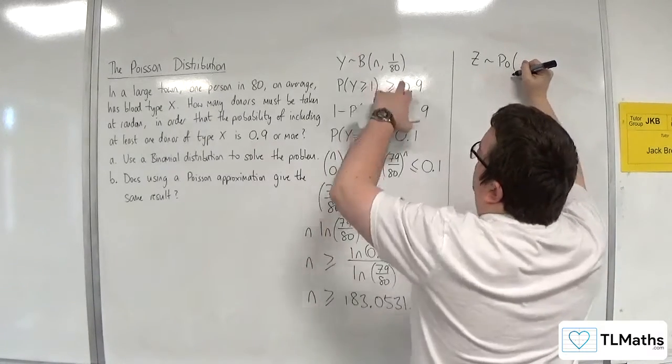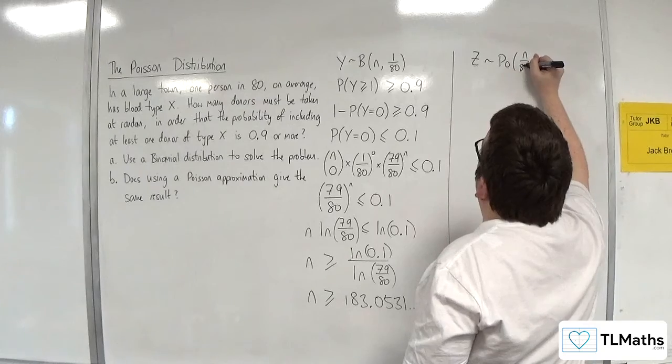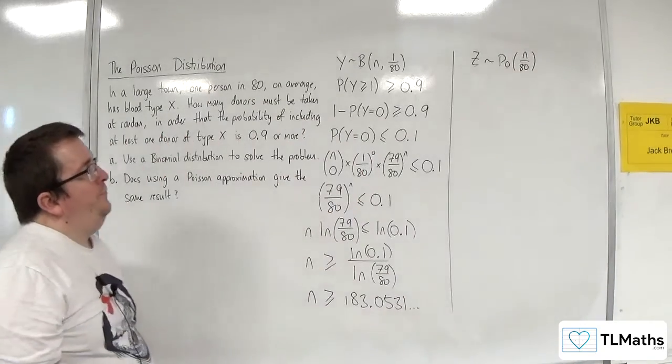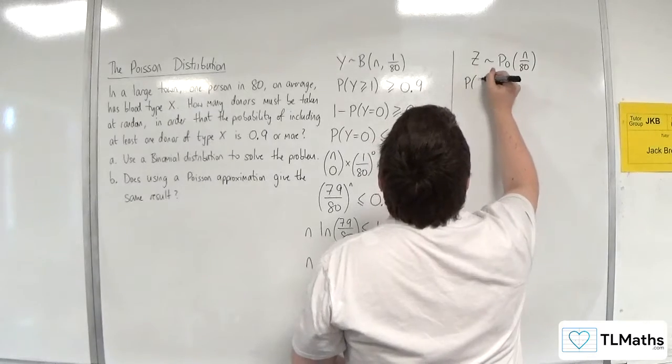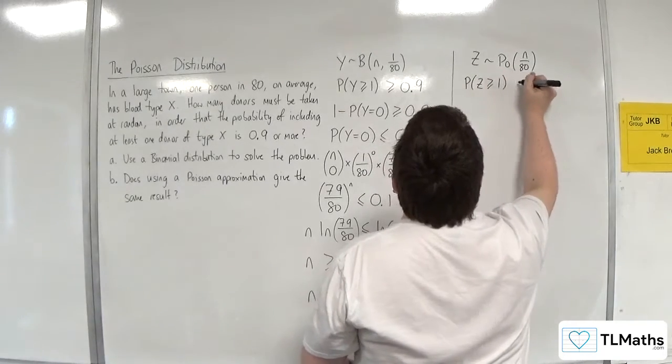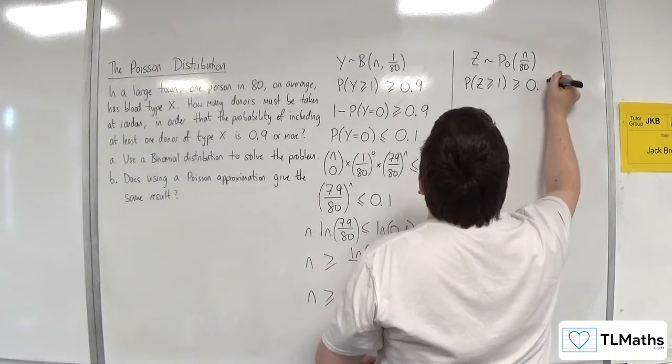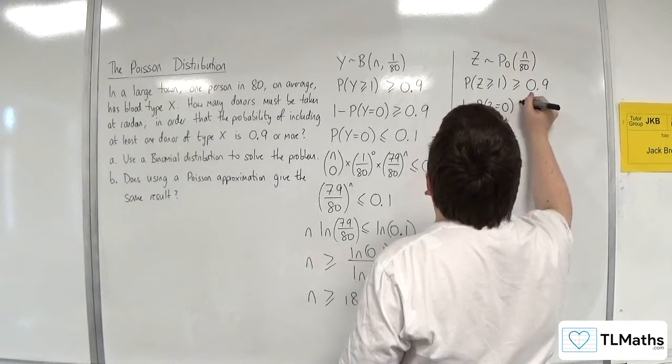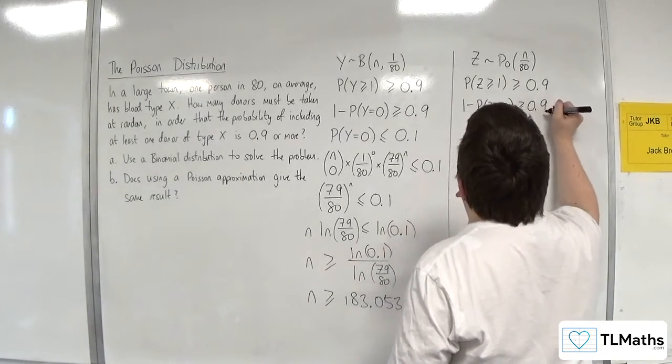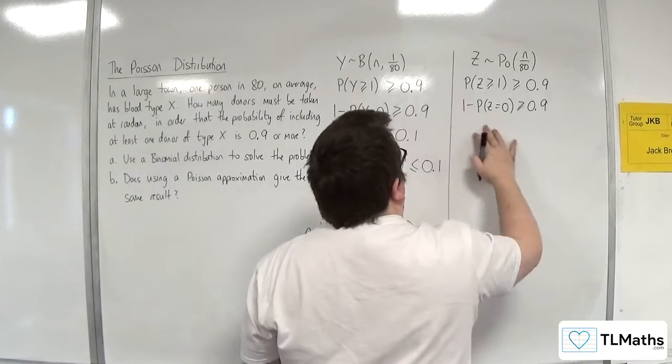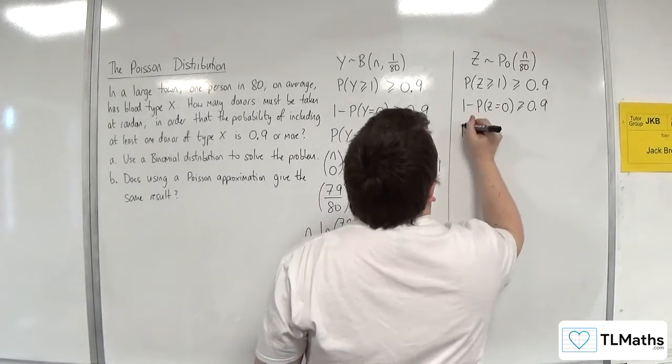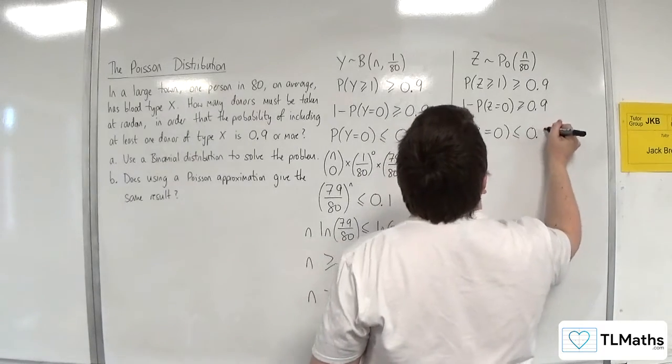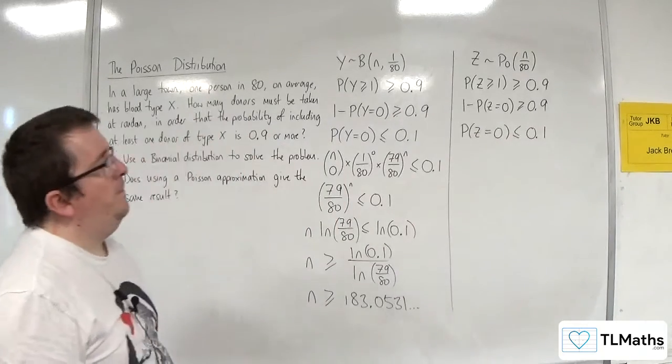Now I'm going to do N times 1 over 80. So N over 80 for lambda. And in the same way, I want the probability of Z being greater than or equal to 1 is greater than or equal to 0.9. So that's one takeaway. The probability of Z being equal to 0 is greater than or equal to 0.9. Take 0.9 from both sides, add probability of Z being equal to 0 to both sides. So the probability of Z being equal to 0 is less than or equal to 0.1.